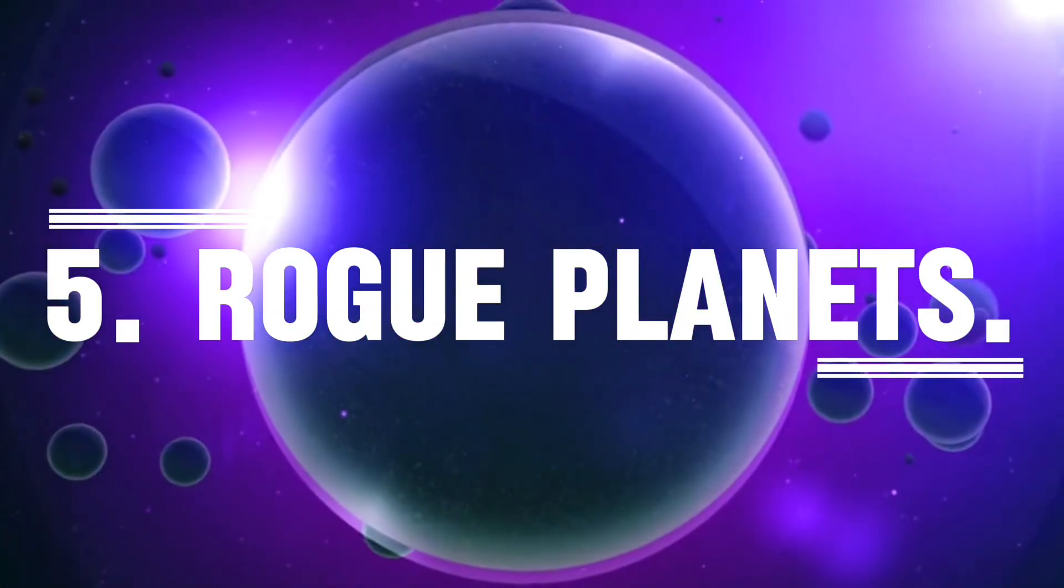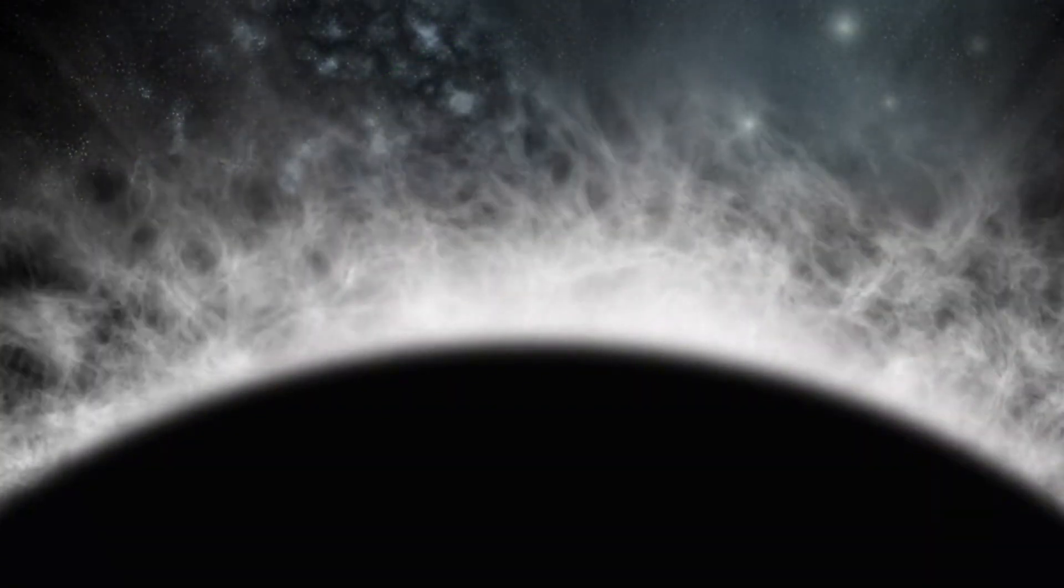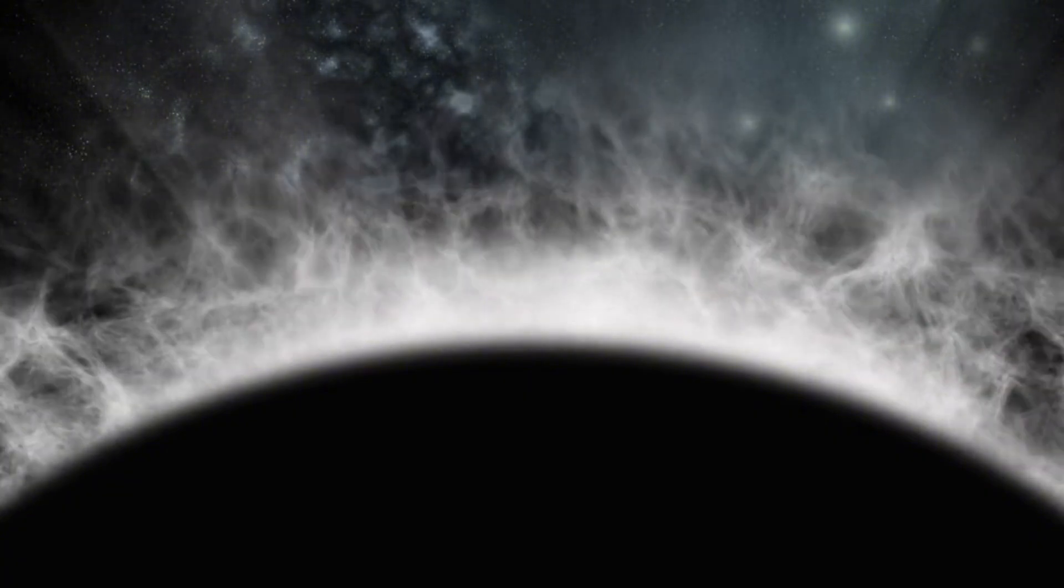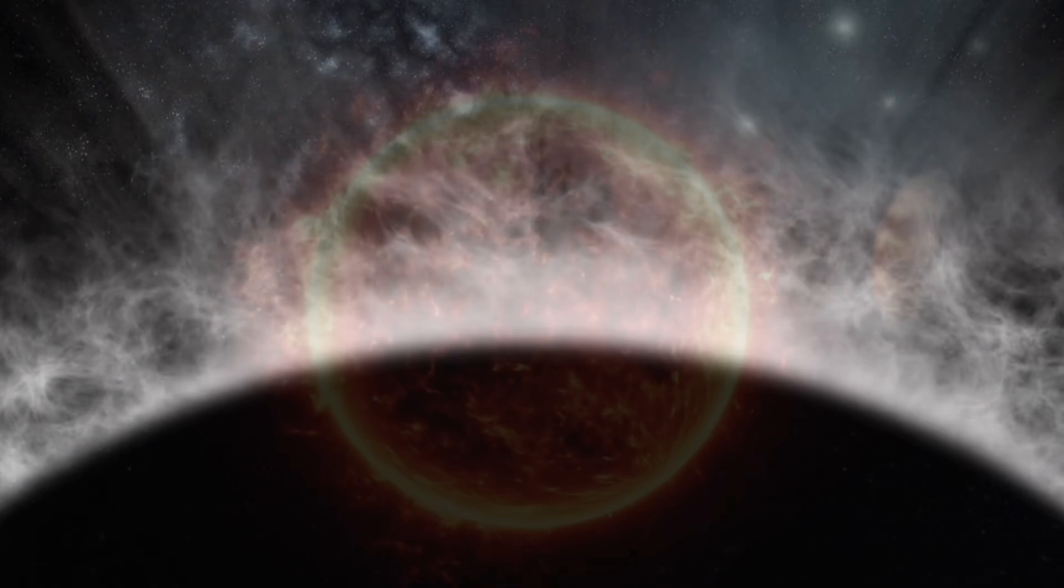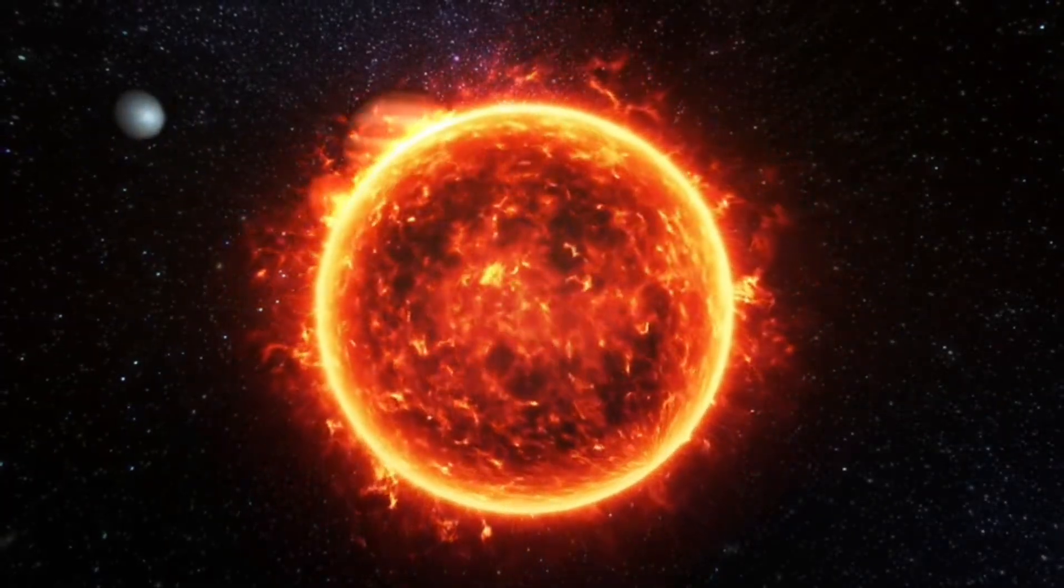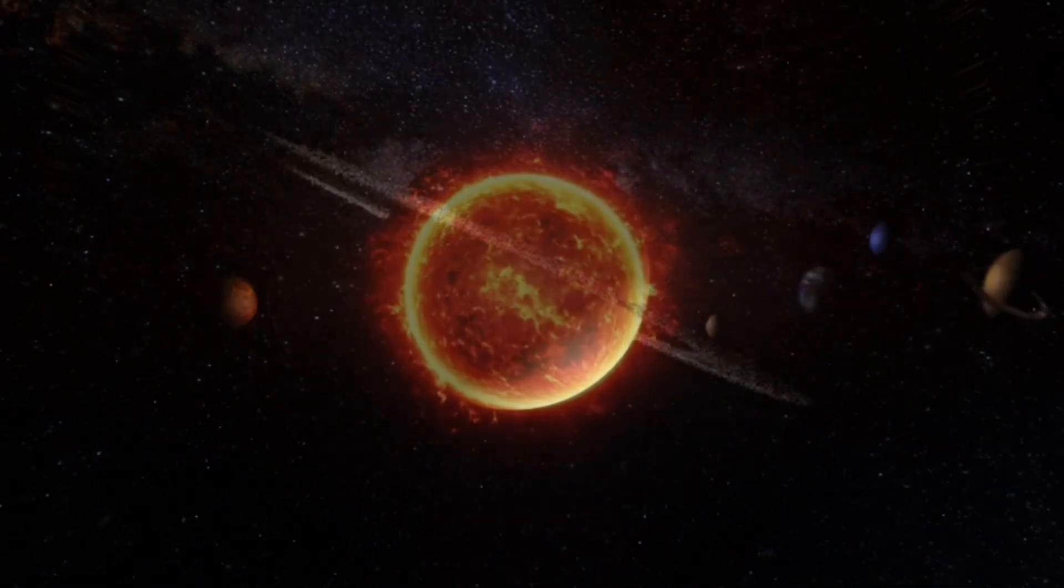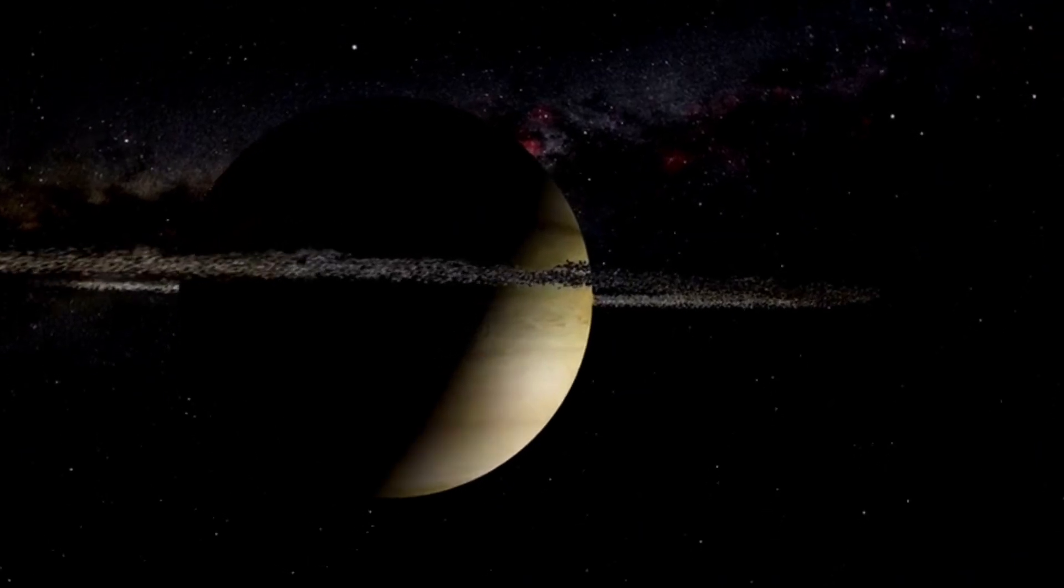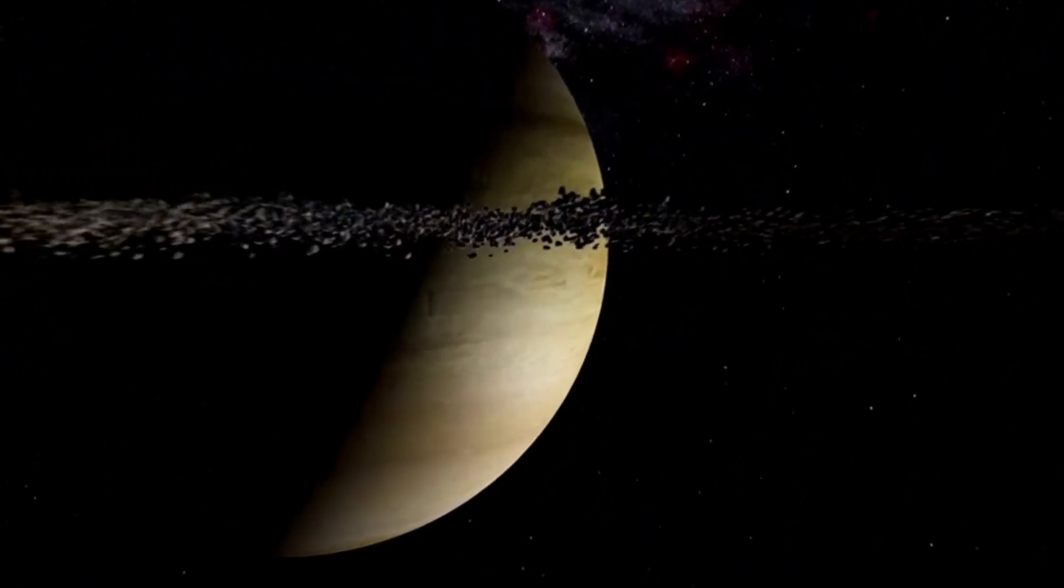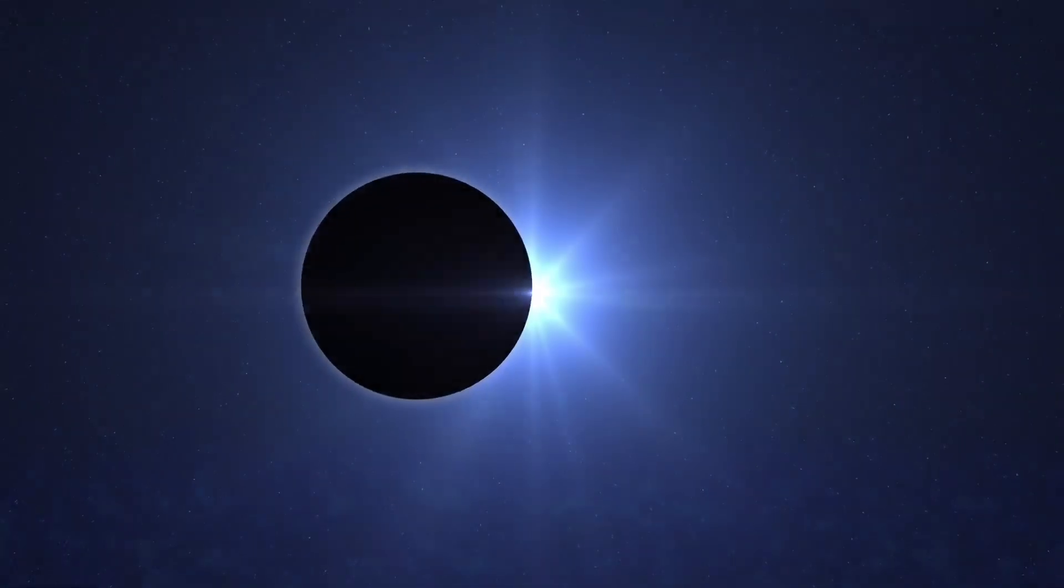Rogue planets, drifters in the dark. Planets usually orbit stars, just like Earth orbits the sun. But what if a planet had no star at all, just floating alone in the darkness of space? These lonely worlds are called rogue planets. Scientists believe there could be billions of them in our galaxy alone. Some may have been kicked out of their solar systems by gravitational forces. Others might have formed alone, far from any star. Without sunlight, you'd think they'd be cold, dead rocks. But some rogue planets might have internal heat from radioactive elements or gravitational compression. That heat could warm underground oceans, where life might survive in complete darkness.